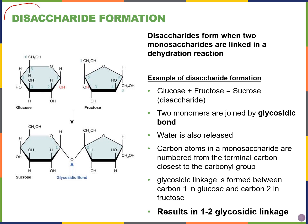Disaccharides are formed by taking two monosaccharides and linking them together through a dehydration reaction, forming a covalent bond called a glycosidic bond. For example, glucose and fructose are linked covalently. Looking carefully: if the hydroxyl group on carbon one is down, this is an alpha formation — an alpha glycosidic bond.